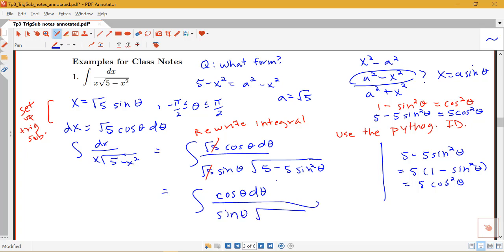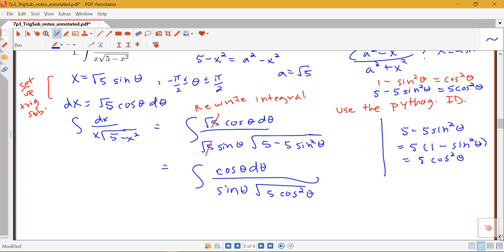And what's under this square root, 5 minus 5 sine squared, is 5 cosine squared theta. So I can go ahead and apply my square root. This is where I am making use of the fact that we're in this interval.